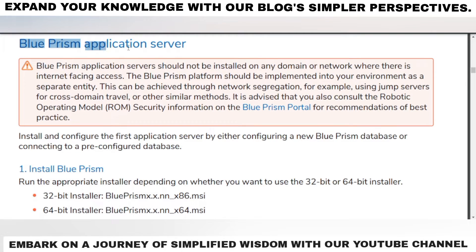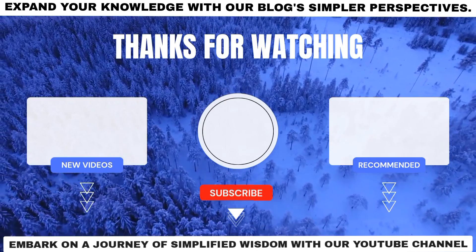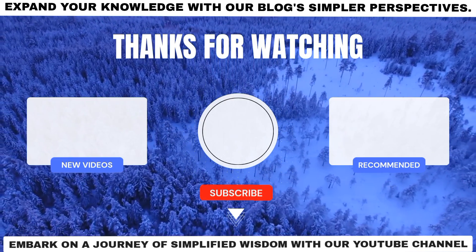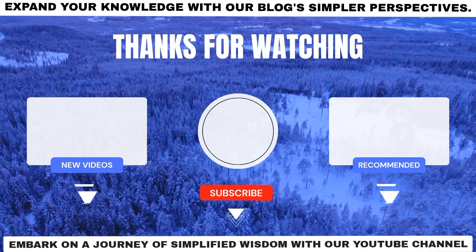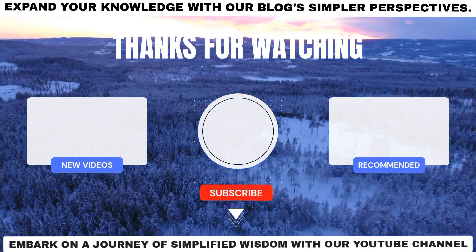The Blue Prism application server should not be installed on any domain or network where there is internet-facing access. The Blue Prism platform should be implemented as a separate entity, which can be achieved through network segregation — for example, using jump servers for cross-domain travel or similar methods. It is also advised to consider the Robotic Operating Model security information on the Blue Prism portal for best practices recommendations. That's the definition of the Blue Prism application server — let me know if you have any doubts. Thank you for watching.